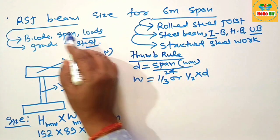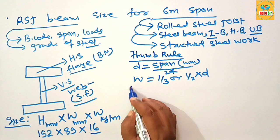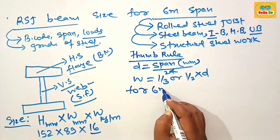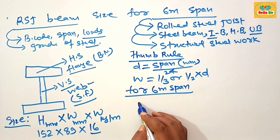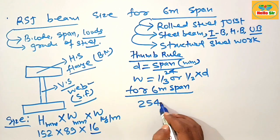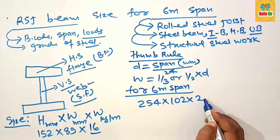But here you have question what size RSJ beam do I need for 6 meter span? For the length of 6 meter span you need something like 254 x 102 x 25.